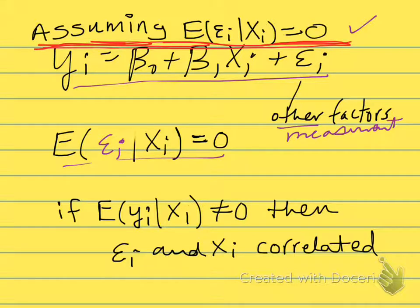It isn't the case that for high values of x the errors are largely positive, or if x is low the errors are negative. Instead, we assume the errors on average are equal to zero, that the effect of other factors on the outcomes are orthogonal to the values of x, independent of the value of x.